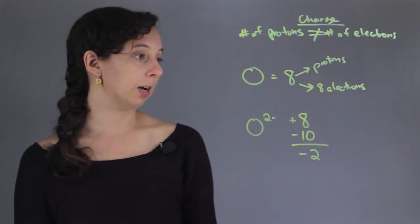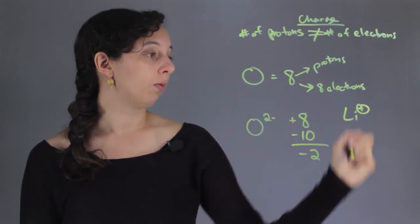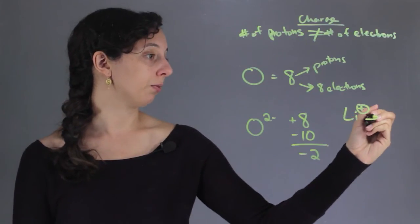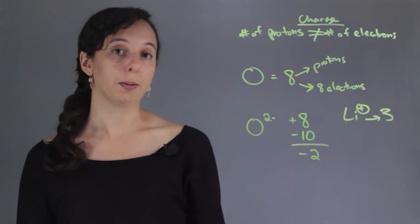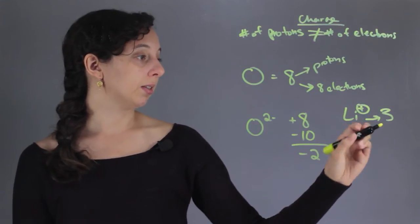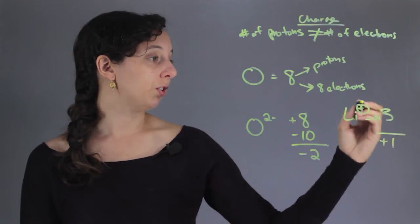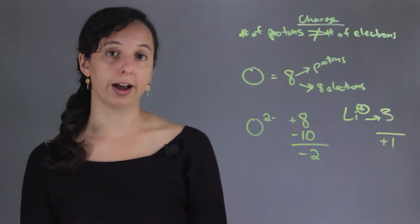Let's just do one more example. If I said that I had a positively charged lithium, what does that mean? Well, lithium is atomic number three. You can find this out by looking it up on the periodic table. And if it has a positive charge, it means that it's going to have an overall charge of positive one. Because if you just show positive, it's an implied one.